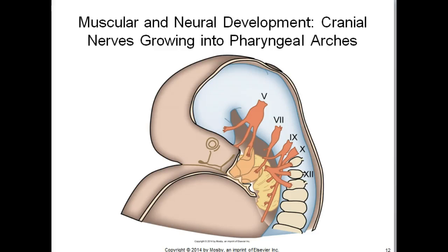The seventh nerve supplies the stylohyoid and stapedius muscle and the posterior belly of the digastric muscle. The ninth nerve, also known as the glossopharyngeal nerve, enters the third arch and supplies the stylopharyngeal and upper pharyngeal constrictor muscles. The tenth nerve, the vagus nerve, innervates muscles of the fourth arch, the inferior constrictors, and the laryngeal muscles.